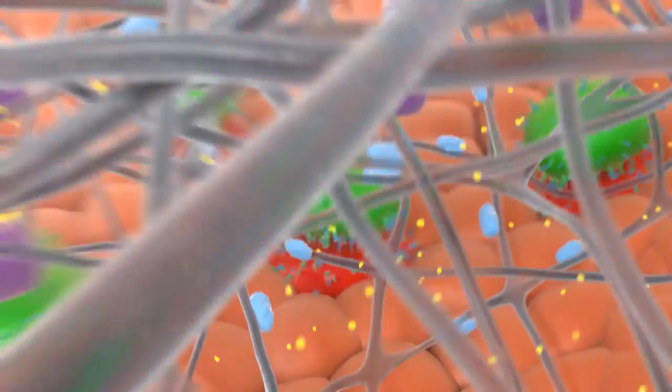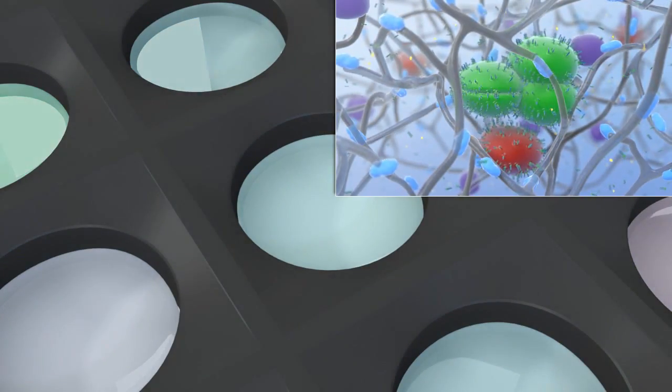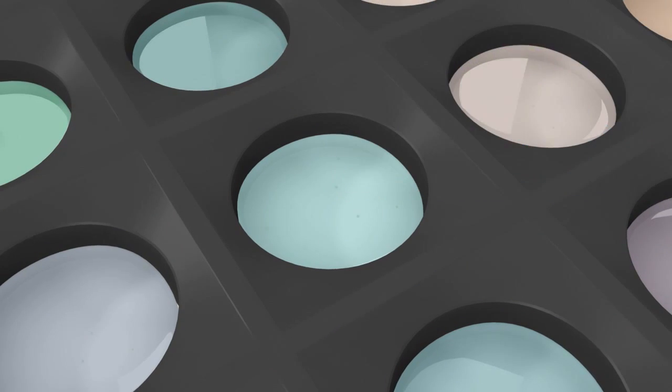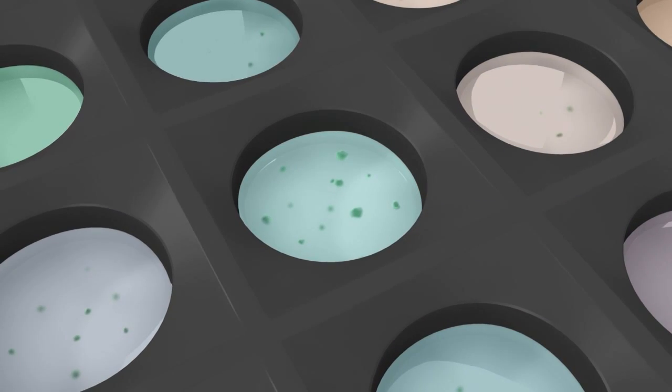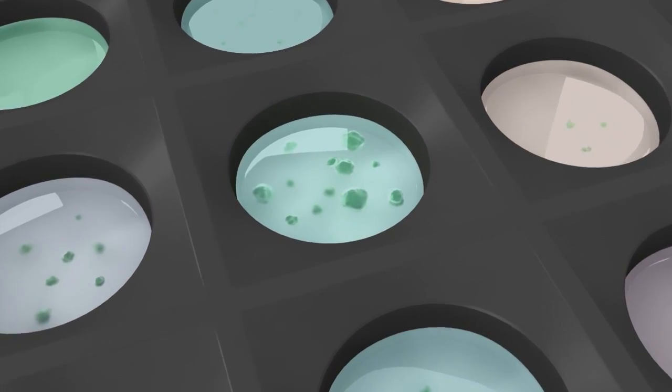QGEL is a synthetic hydrogel matrix that can be used for 3D cell culture. One application which works very well is the growth of cancer cells in 3D, which is very interesting for the pharmaceutical industry to test cancer drugs.